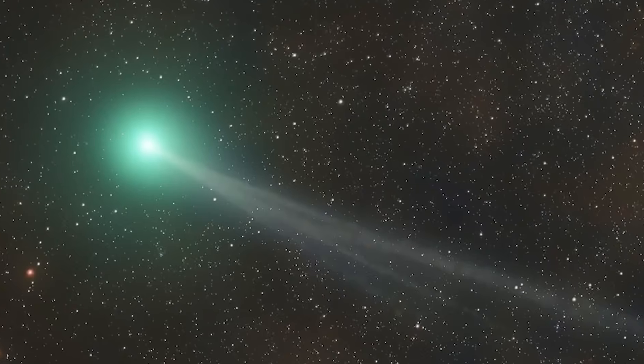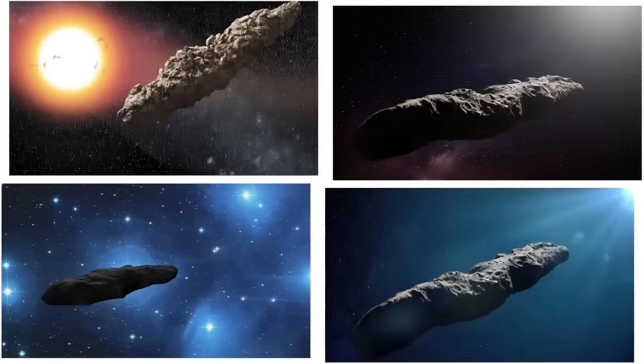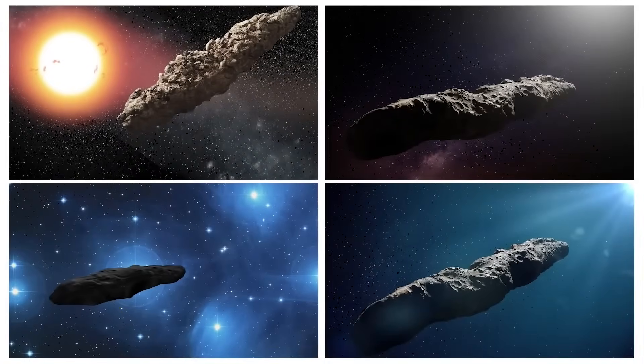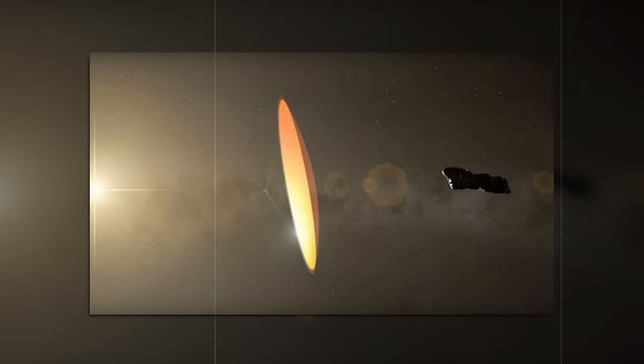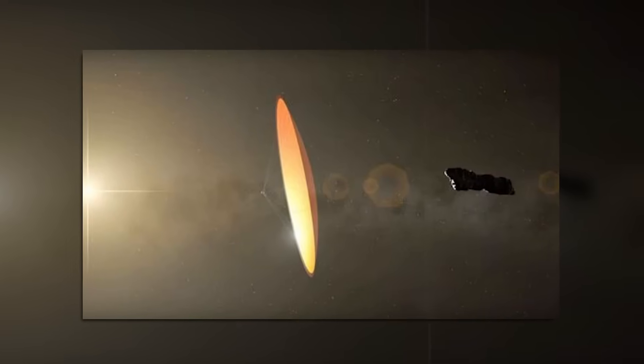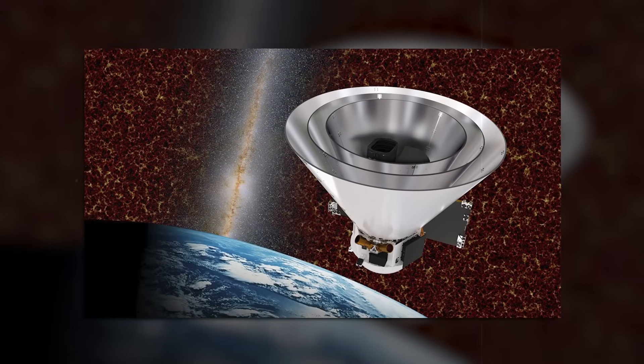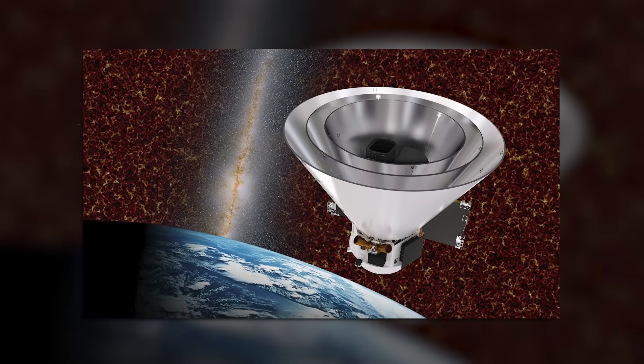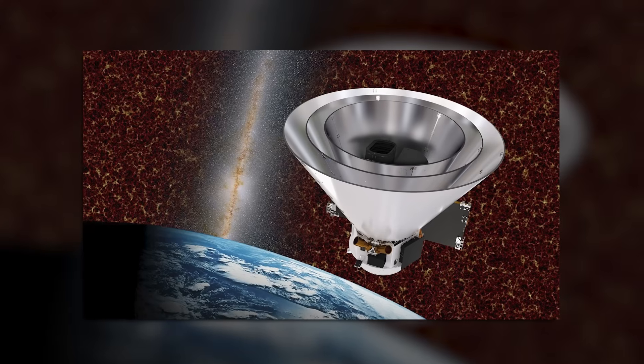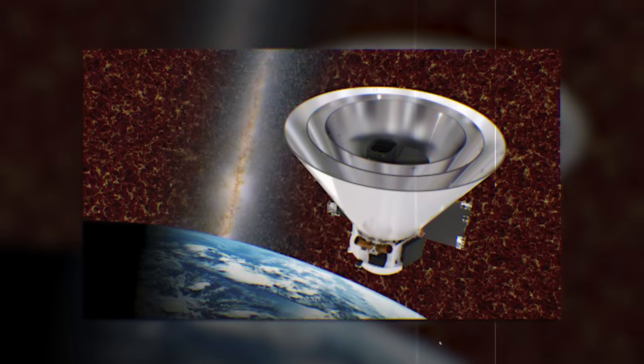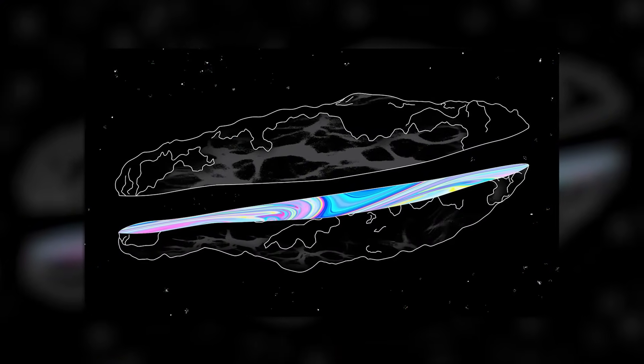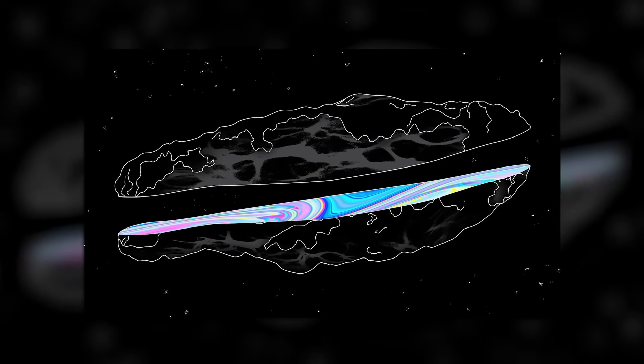Then came the reports of an anti-tail. A strange, narrow tail pointing toward the sun, not away from it. Anti-tails are rare, and often the result of specific viewing angles and unusual dust patterns. But this one stood out. It held together too well, with unusual symmetry. It hinted at a dust structure that wasn't just being pushed by solar wind, but possibly ejected in a controlled jet from one side of the object.